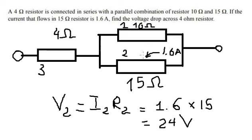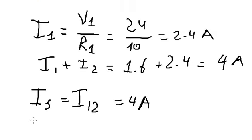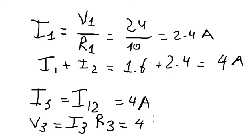The question asks for the voltage across the 4 ohm resistor. So we got V3 equals I3 multiplied by R3. That's 4 multiplied by 4, and we got 16 volts.